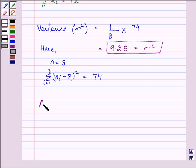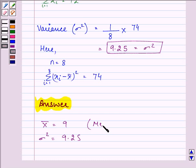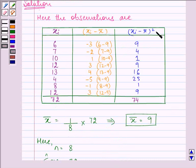So, let us write down the answer again. It is, mean is coming out to be 9, whereas variance is equal to 9.25. Right, this completes the session. Hope you understood the construction of this table and the procedure well. Bye for now.